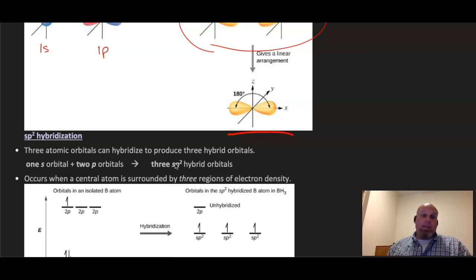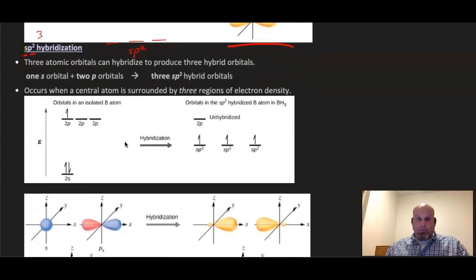Moving up, sp2 hybridization. This is pretty straightforward. I have an s and I have two p's. So that's a total of three atomic orbitals, one s and two p's. So that means I make three hybrid orbitals, and those orbitals are all going to be referred to as sp2 hybridized orbitals. An example here is the boron atom. As I mentioned in the last section, this is where this helps to explain situations in which we have less than a filled octet or situations where we have an expanded octet.